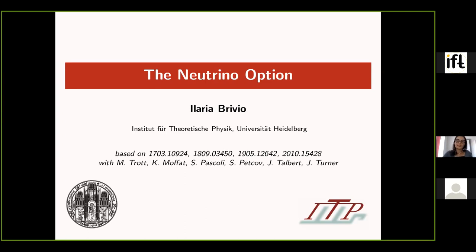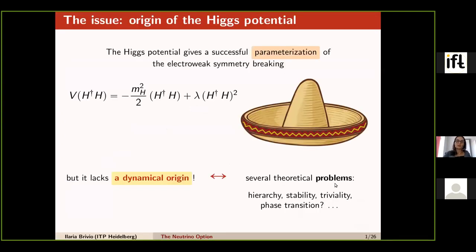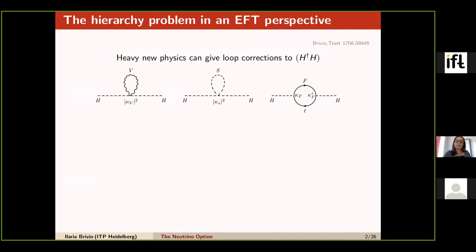Even though the neutrino option sounds closely connected to neutrinos, the story actually starts from the hierarchy problem — the fact that the Higgs mechanism is a nice description of electroweak symmetry breaking but lacks a dynamical origin. Coming from the perspective of effective theories, the hierarchy problem is usually stated in terms of threshold contributions: whenever you have some heavy new particle — vector, scalar, or fermion — that couples to the Higgs.